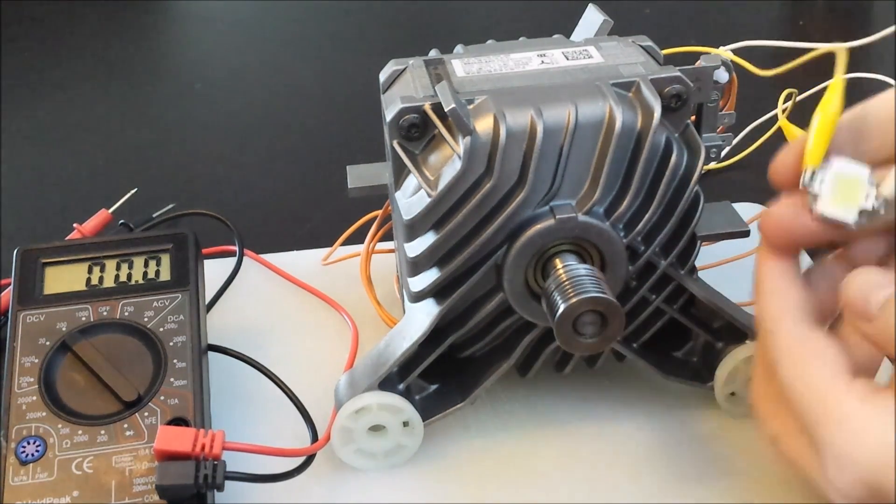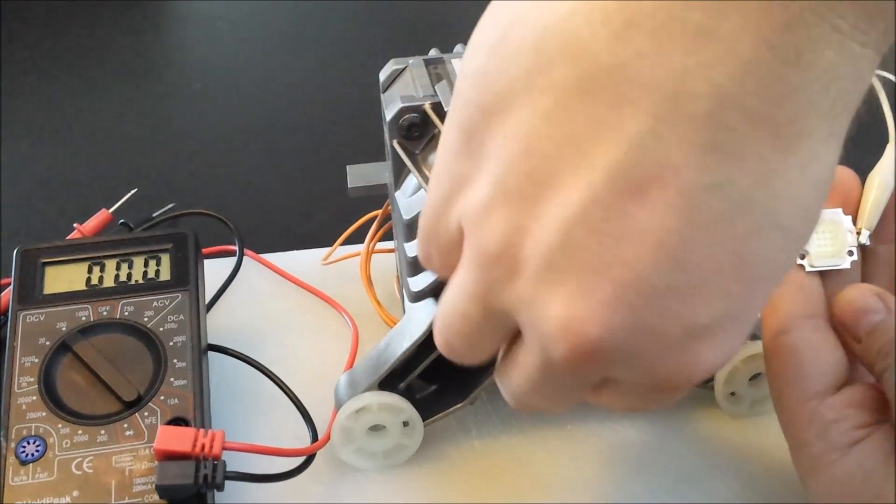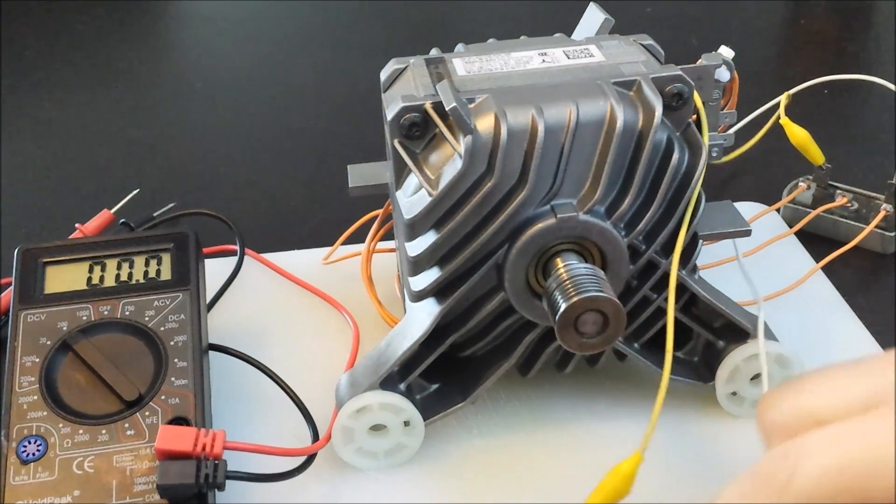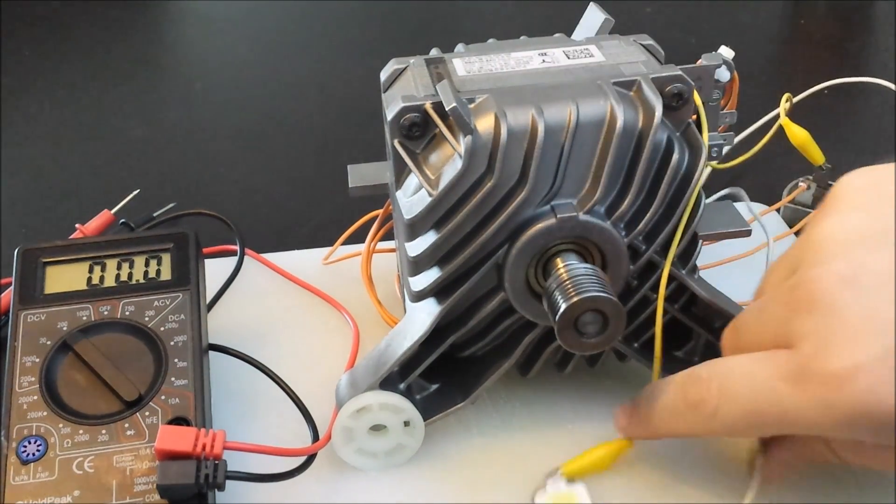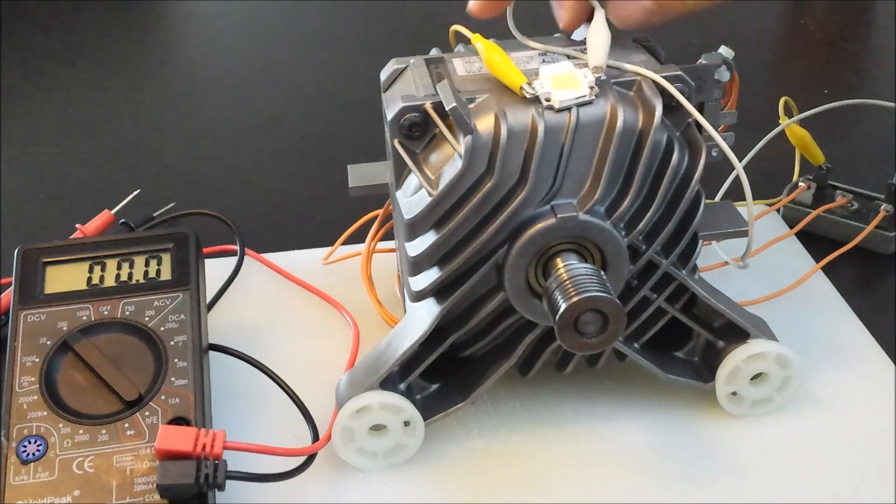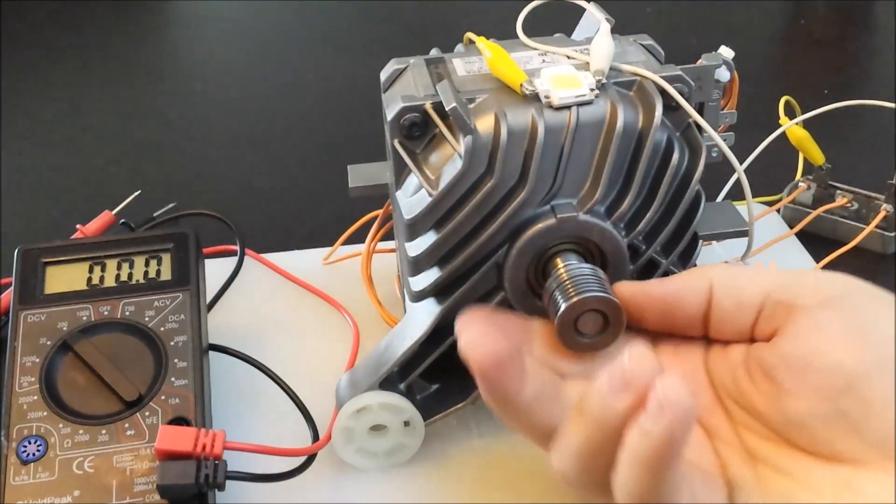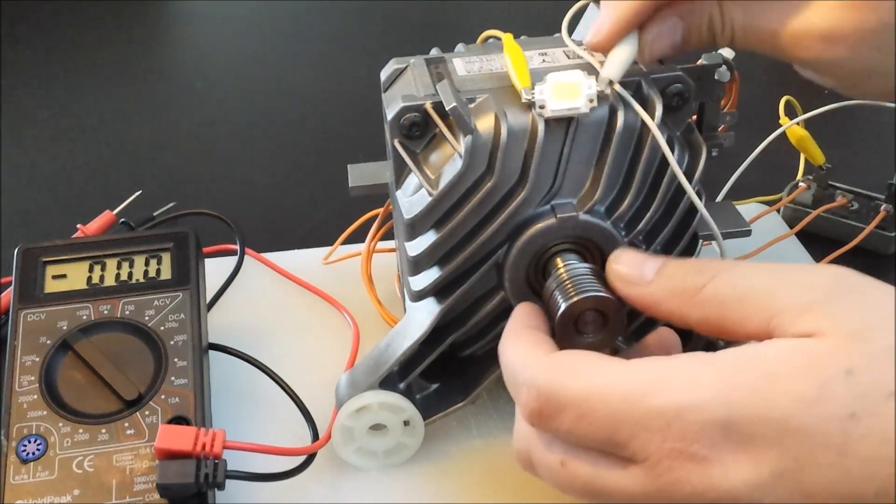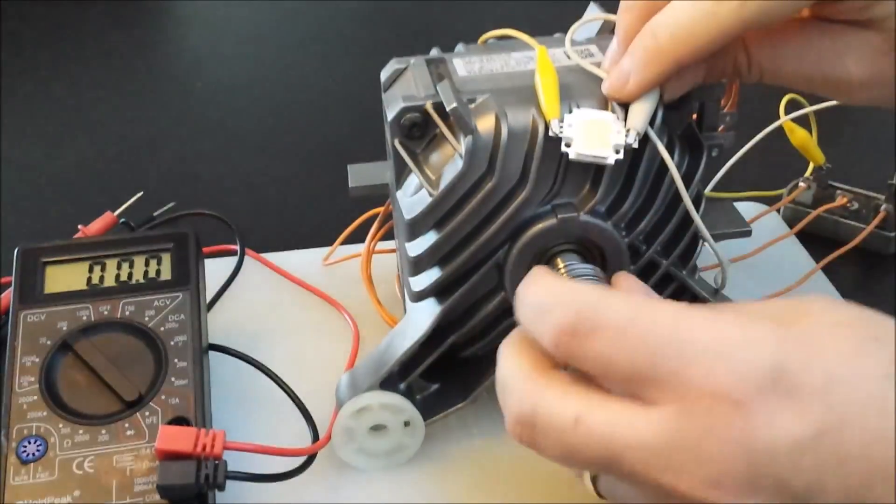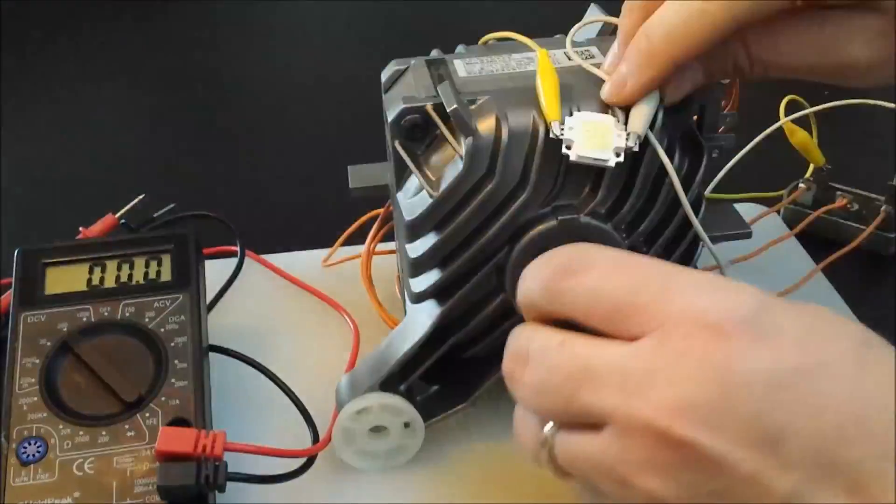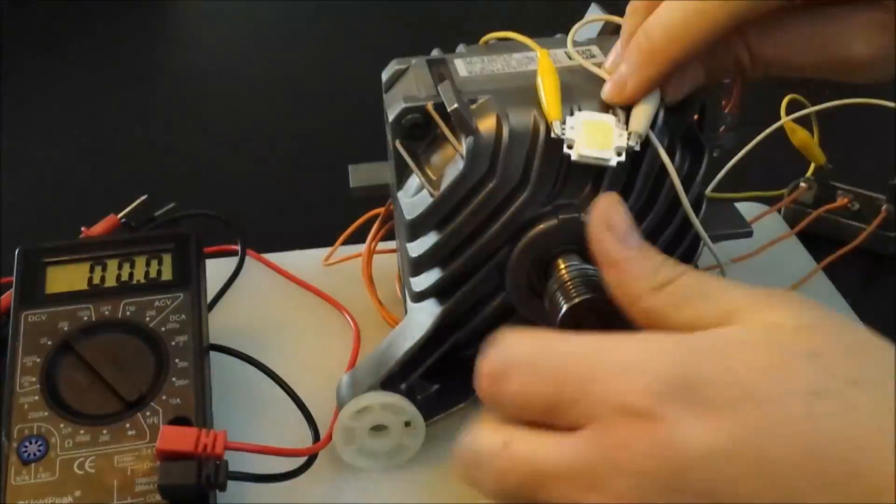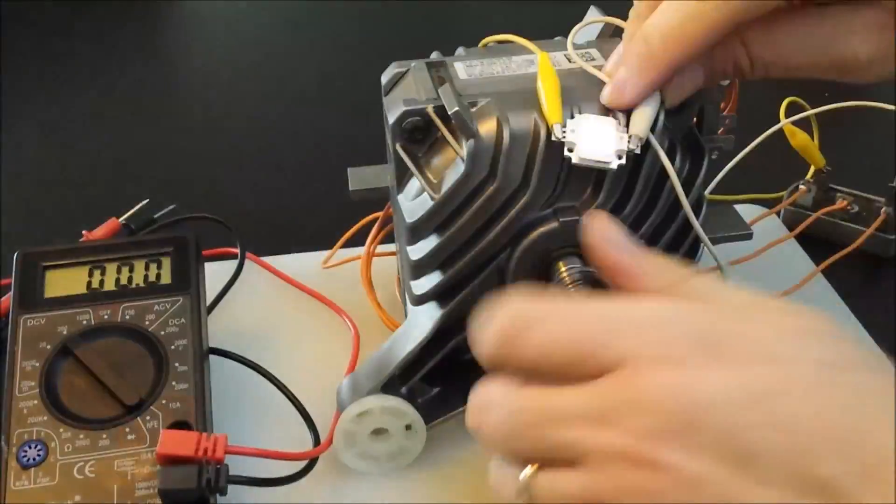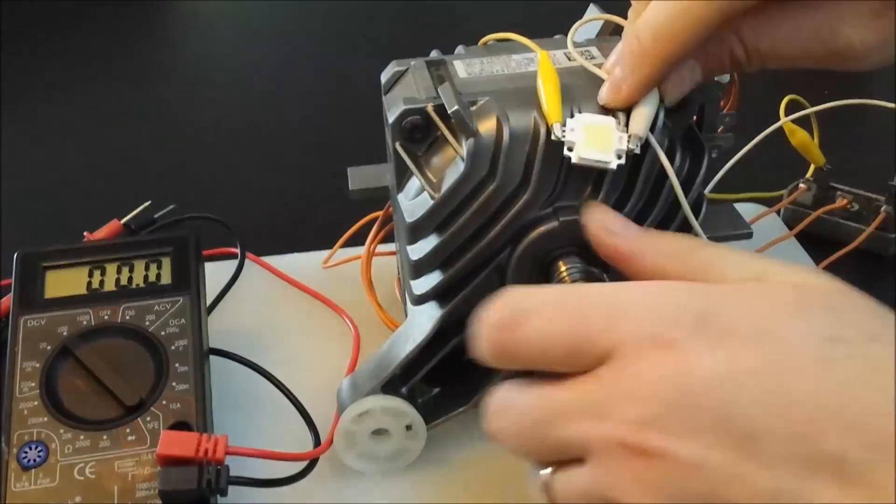And as you can see again just by simply turning my fingers on the motor drive shaft, it lights up very, very good. This is a 10 watt LED with a current around 800 to 900 milliamp hours.